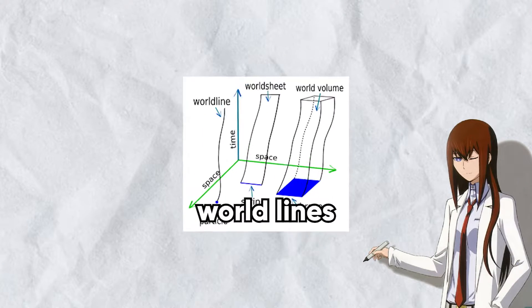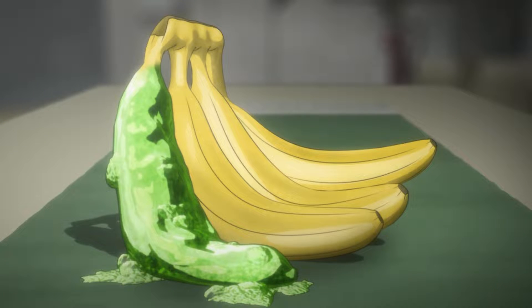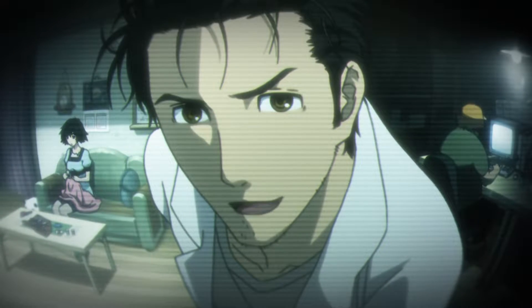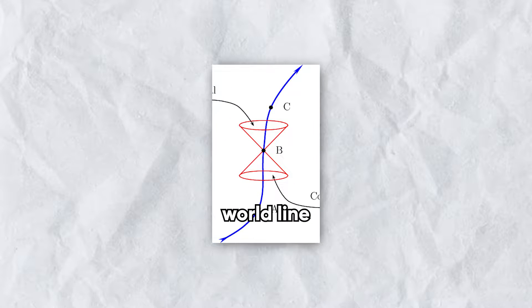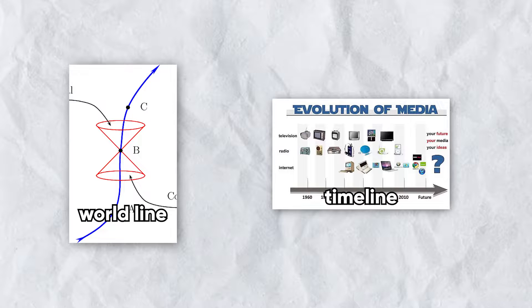Let's start with world lines. A world line traces an object's path through spacetime — it's essentially an entire record of an object throughout its duration. More specifically in Steins;Gate, this is used to represent the many possible states of the universe, including all of its events over time. To simplify this, the world line is conceptually the same as a timeline, as the current state of the universe depends on its events in time.